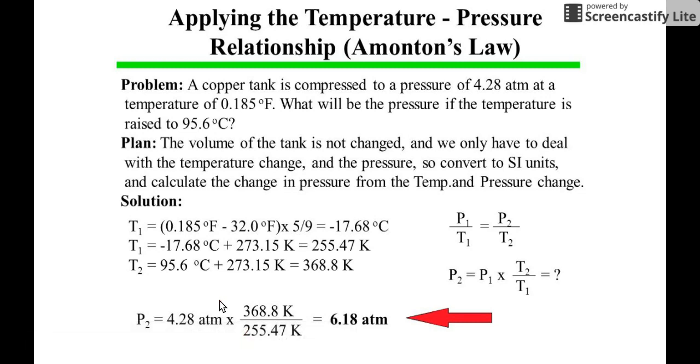P2 equals P1 times T2 over T1. Substituting all your values, you've got 4.28 atmosphere times 368.8 Kelvin divided by 255.47 Kelvin. Therefore, you'll get the final answer to be 6.18 atmosphere.